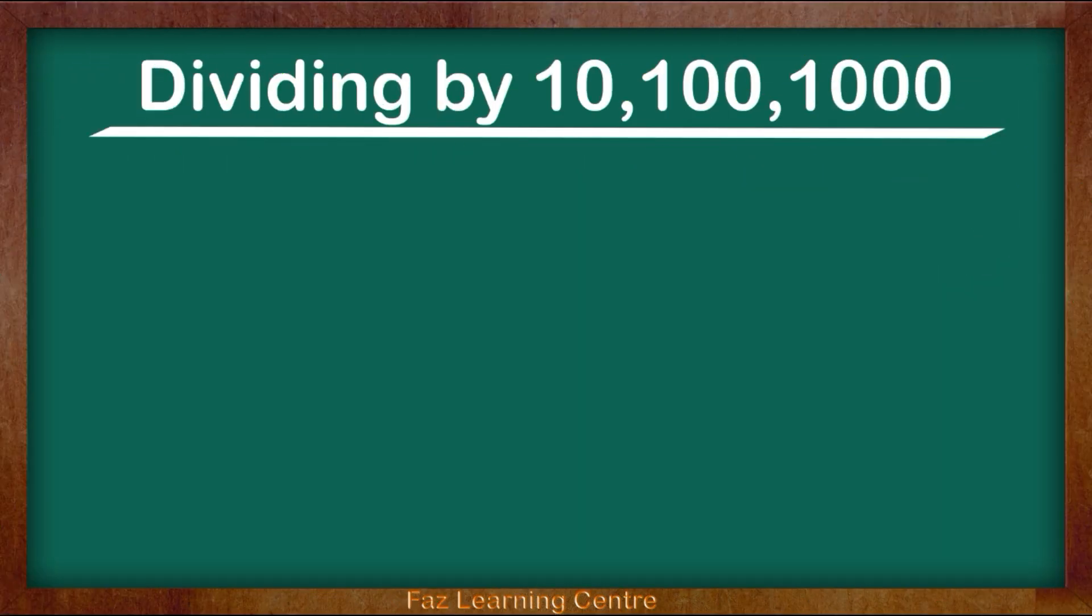My next example is 896 divided by 10. I have chosen this number purposely because later on I will be showing you what happens when we have no digits at the end.